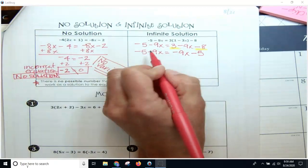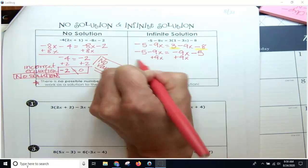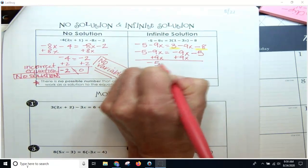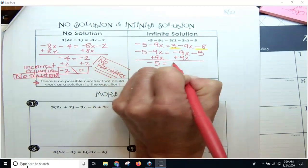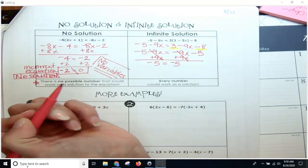Now if I move my variables to one side, I'm going to add 9x and I'll get negative 5 equals negative 5 because these both cancel out as zero pairs.